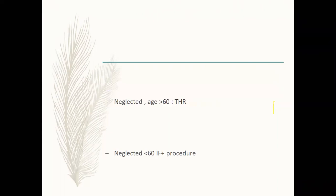Sandhu said: for a neglected patient aged more than 60, go for THR. For a neglected patient less than 60, go for internal fixation and osteotomy or vascularized bone graft. More than 60 — total hip replacement. Less than 60, irrespective of AVN, fix the fracture, do the osteotomy, do bone grafting, and fix with a DHS.